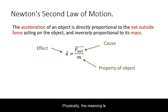Physically, the meaning is that the observed effect of acceleration is due to the cause of a net outside force, but modified by a property of the object, in this case, inertial mass.